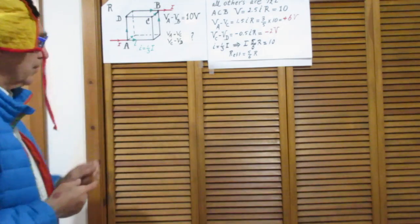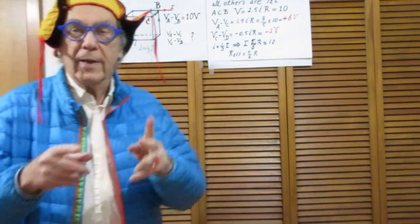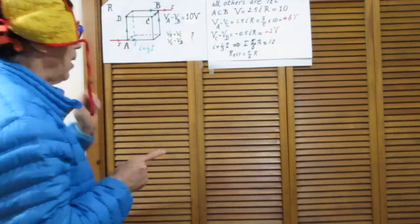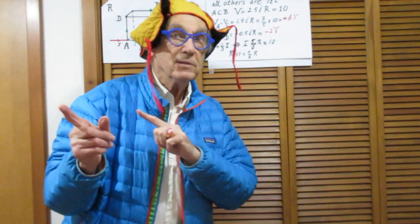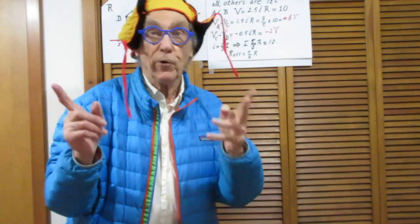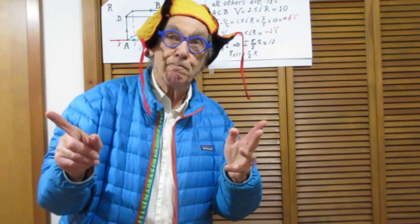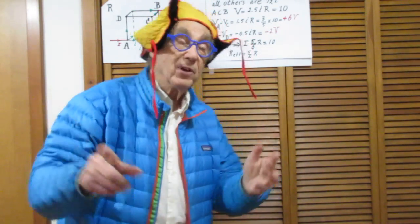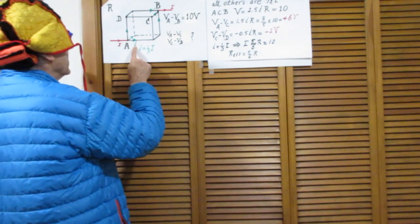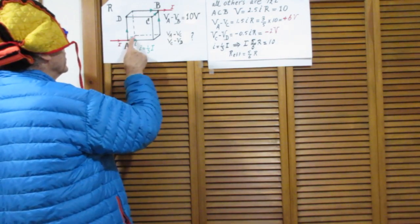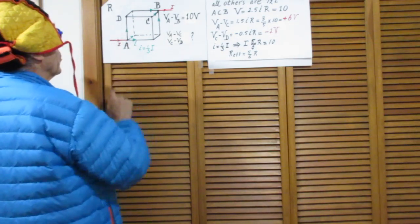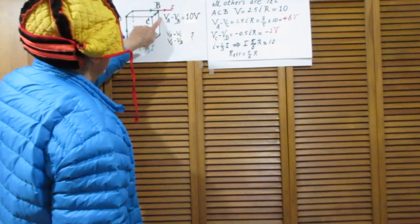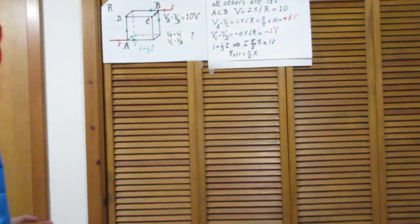This current right here will split equally in all three directions. Because of the symmetry of the problem, there is not one direction that is preferred over any other. I take this for granted because it's so obvious: this current I — little i is one third of capital I. This is also little i, this is also little i, and as they arrive here this must also be little i, little i, and little i — and together they are back to capital I.